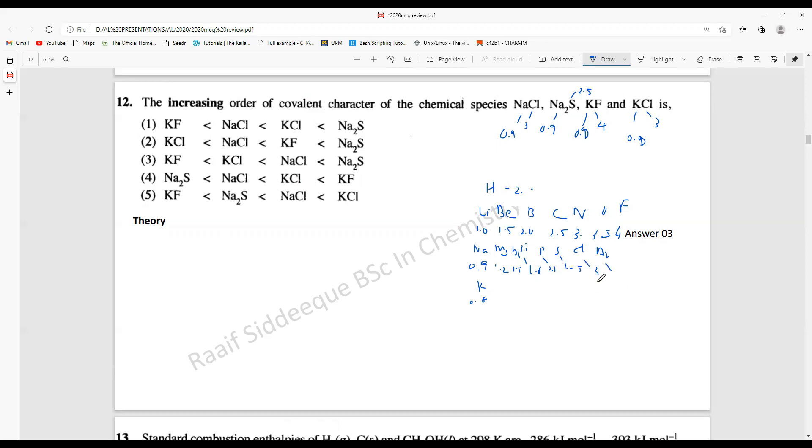From this you can identify the maximum electronegativity difference. If you have a very small electronegativity difference, there is a higher covalency - that is the idea.